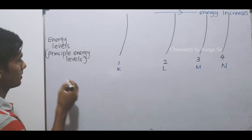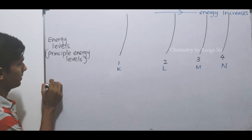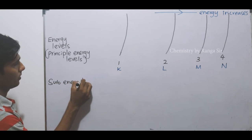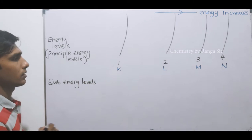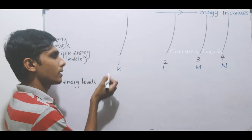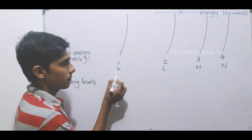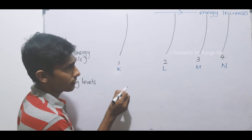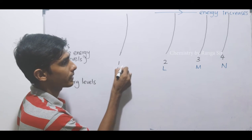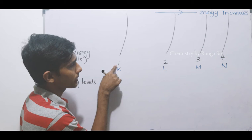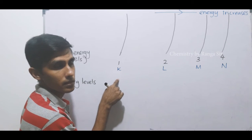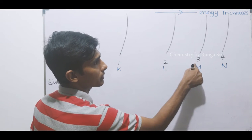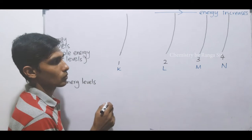Electrons in these energy levels are first divided into sub energy levels. The number of sub energy levels present in a given main energy level is the same as the number of that particular main energy level. So the first main energy level has one sub energy level, the second has two, the third has three, and the fourth has four sub energy levels.